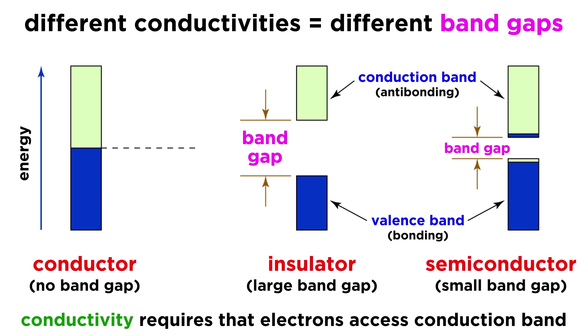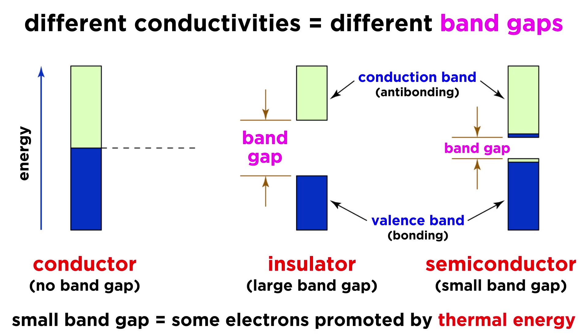Semiconductors, on the other hand, have a small enough band gap that thermal energy in the system is able to keep some of the bonding orbitals in the valence band empty and promote some electrons into the antibonding orbitals in the conduction band. This is why semiconductors conduct electricity better at higher temperatures, because there is more thermal energy available to promote electrons into the conduction band, and thus a stronger current is able to form.